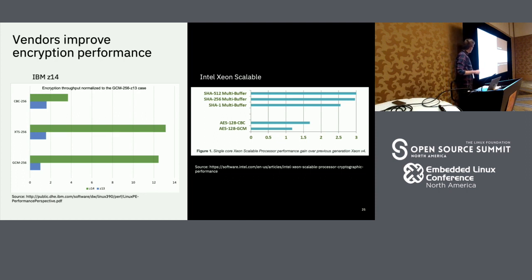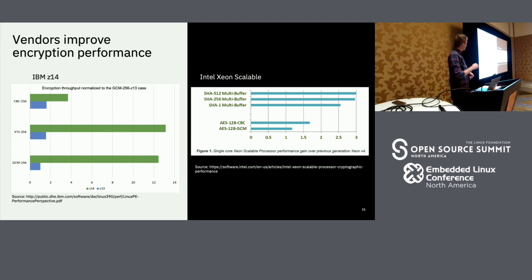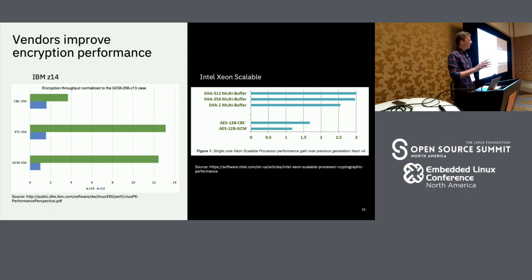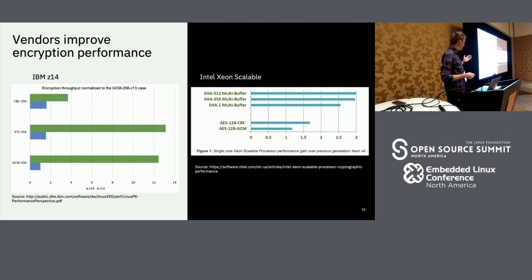At IBM with the Z14, the hardware improvements introduced show AES-GCM improving around 12 times compared to the former machine — the focus has really been set on improving hardware performance. AES-XTS mode has also tremendously improved in performance. AES-XTS is basically selected as the mode for data at rest encryption — XTS is the preferred mode for data at rest, and GCM for data in flight. The focus is clear.